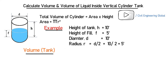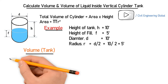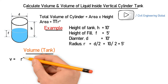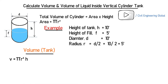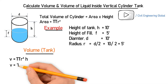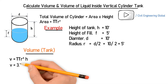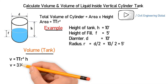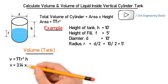To calculate the volume of the tank, we have the formula V is equal to pi r squared multiplied by H. Putting in the values, we get 3.14 multiplied by 5 squared multiplied by height, which is 10.